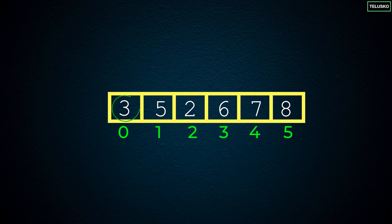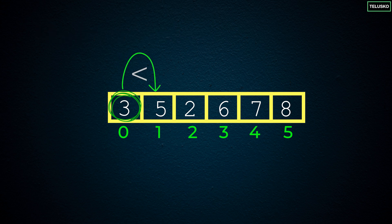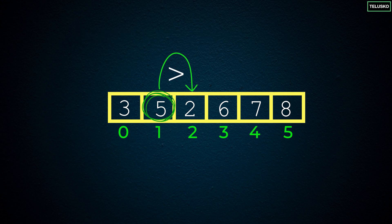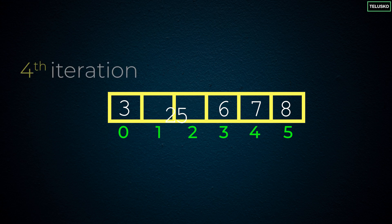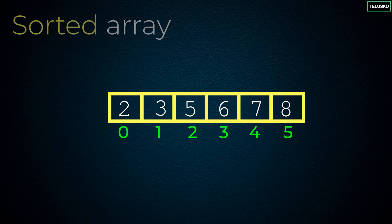Now we process the first three values. Assume three is the biggest, then compare with five — five is bigger. Make five the new biggest, discard three. Compare five with two — five is still biggest. So five needs to go to the location of two, and they swap. Then for the remaining two values we do the same. We keep doing this until we reach the end of the array. With only one value left, it's already sorted. By doing this, we get a fully sorted array.